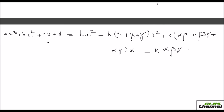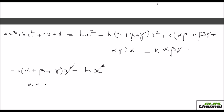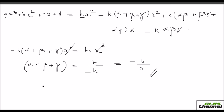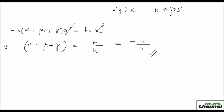Now let us equate the coefficients. For the x squared term: minus k(alpha plus beta plus gamma) equals b. Cancelling x squared, we get alpha plus beta plus gamma equals b over minus k. Since k equals a, we replace k with a, so alpha plus beta plus gamma equals minus b over a.